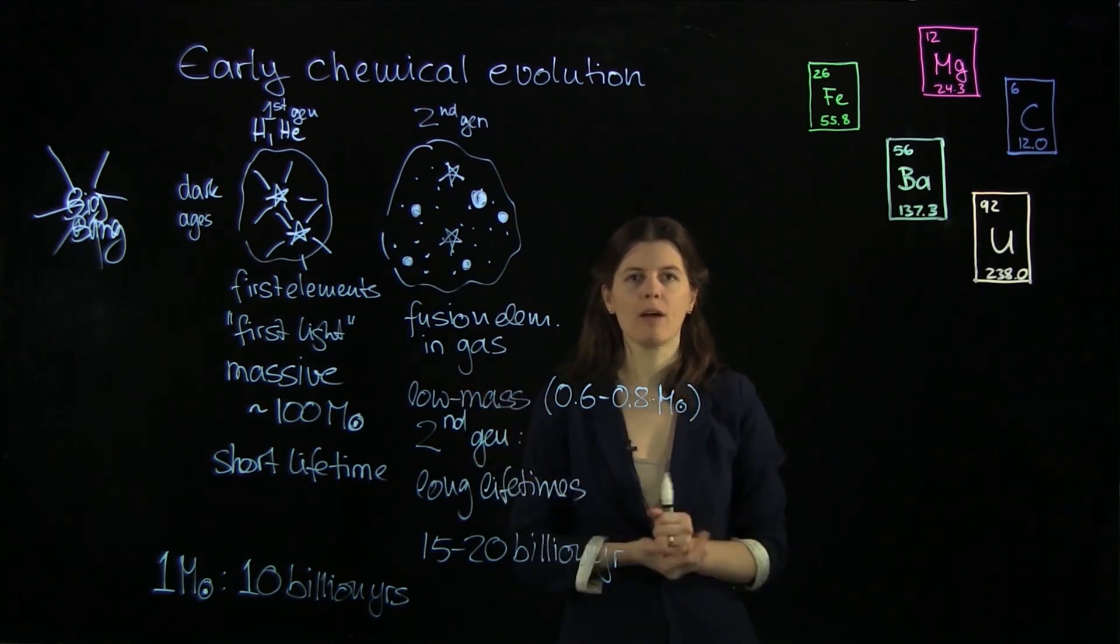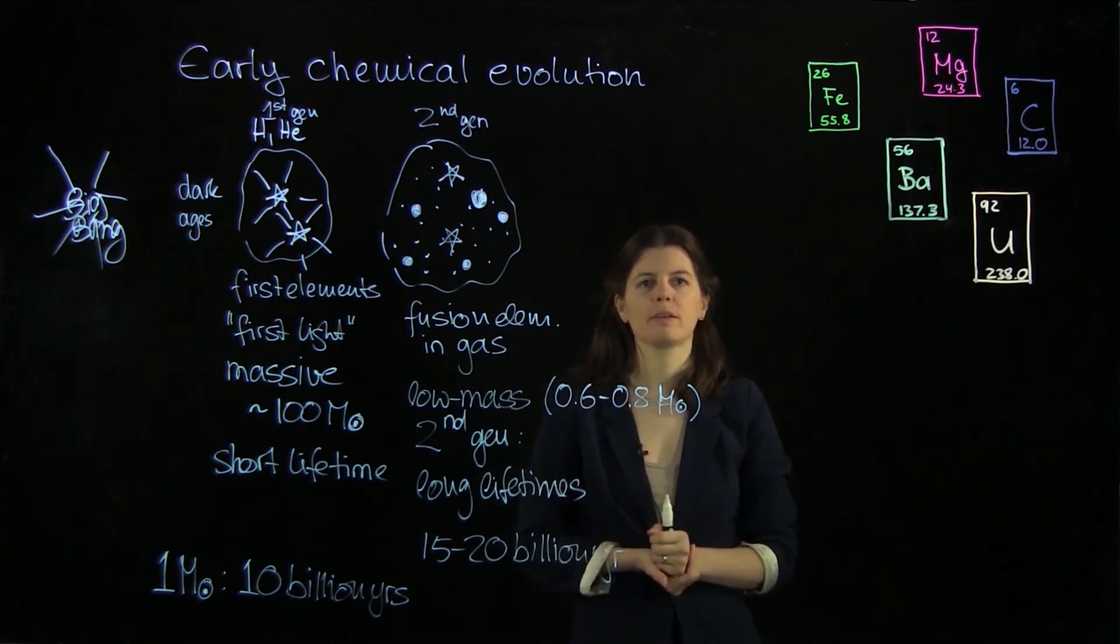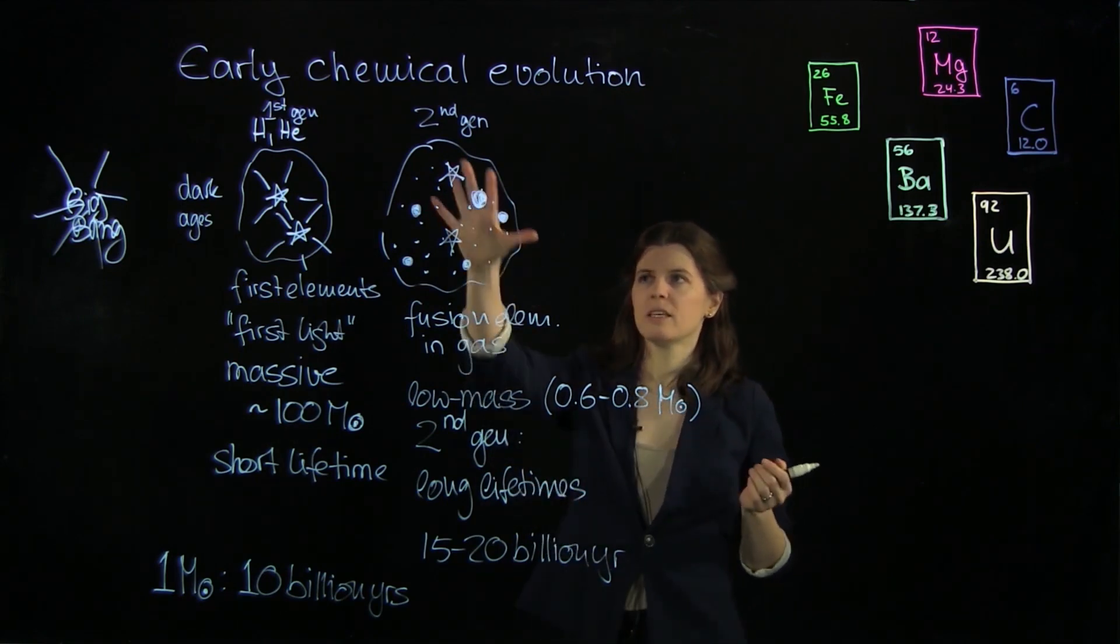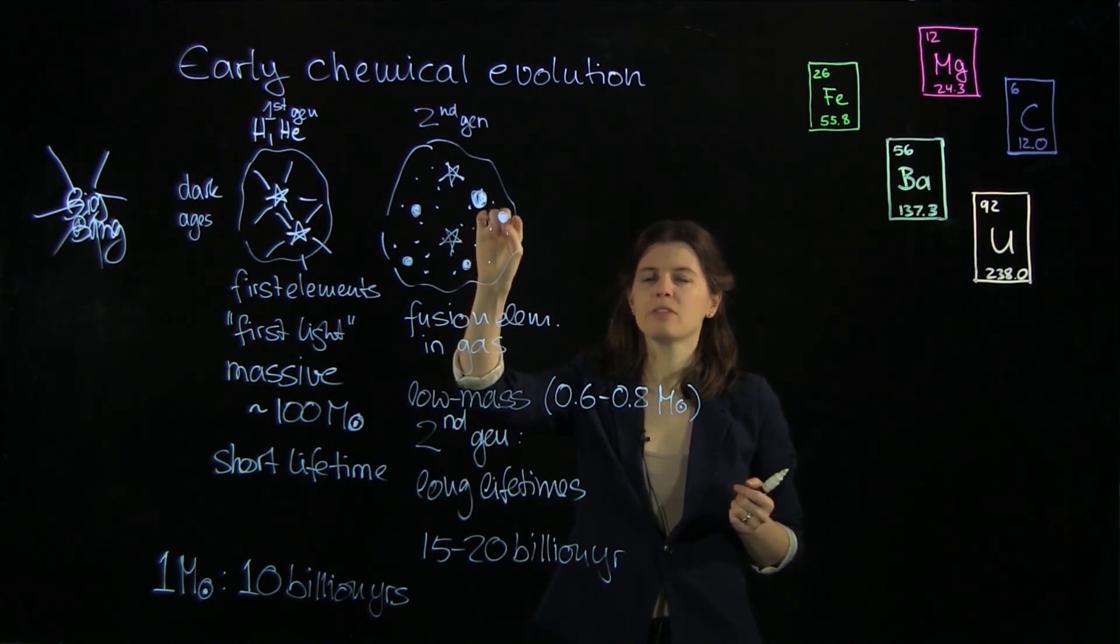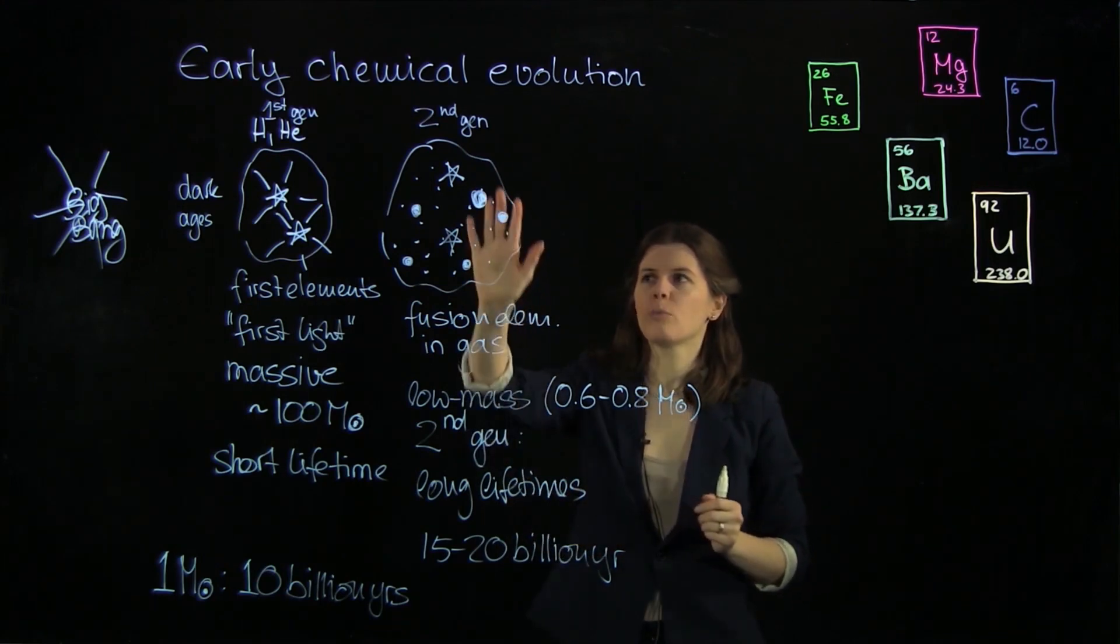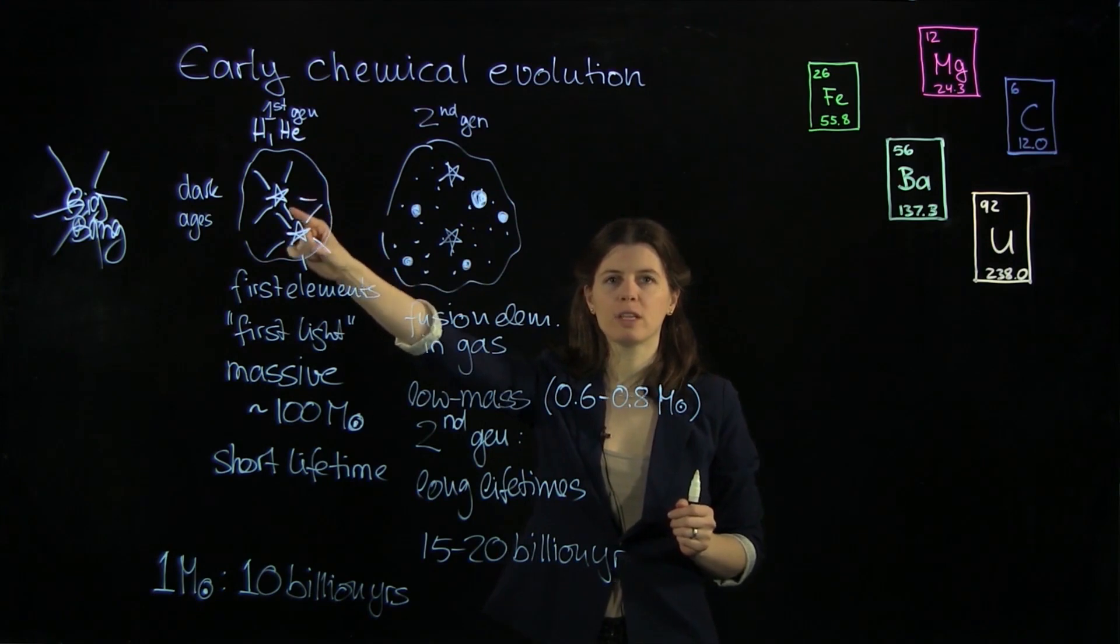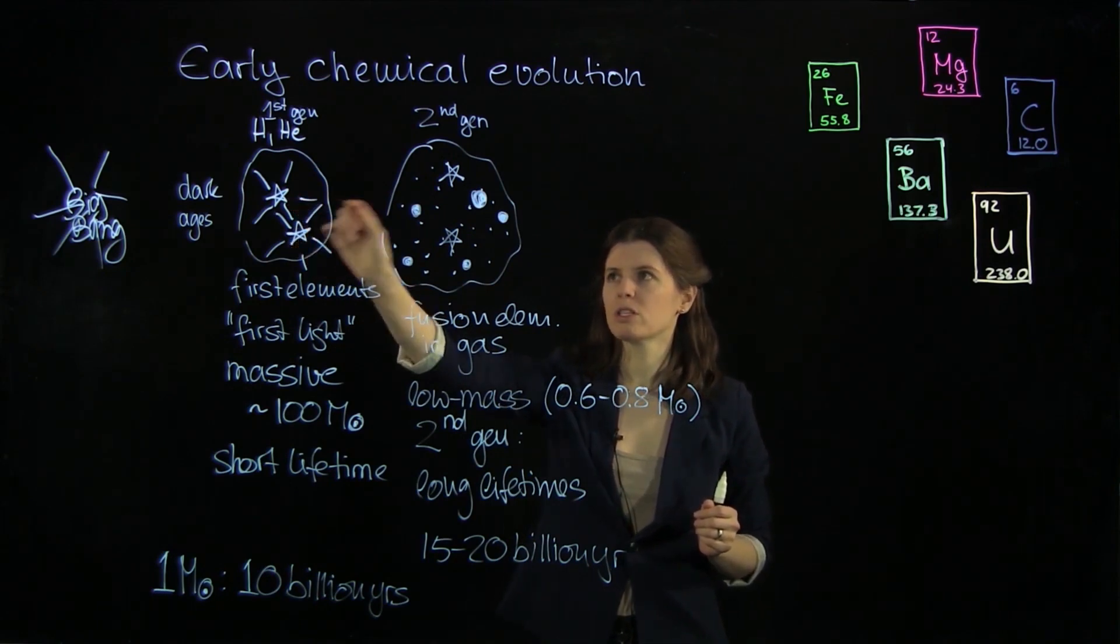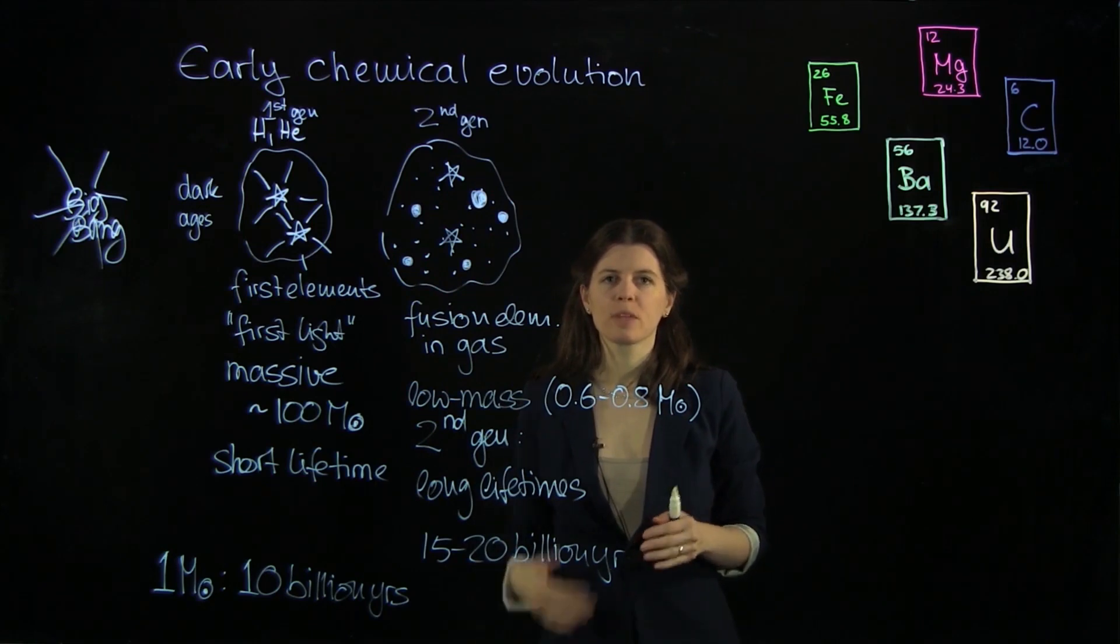Now what does this imply having a long lifetime? It means that these stars are still around, they're around today. We can observe them today. And that means that we can use them to study the composition of this early gas here because when they're formed they have incorporated in all their layers throughout the composition of this gas cloud that was enriched by these very first stars. So we have means to study the first stars and what came out of their supernova explosions and what happened at this very early phase of star formation, galaxy formation, and the formation of all the chemical elements.